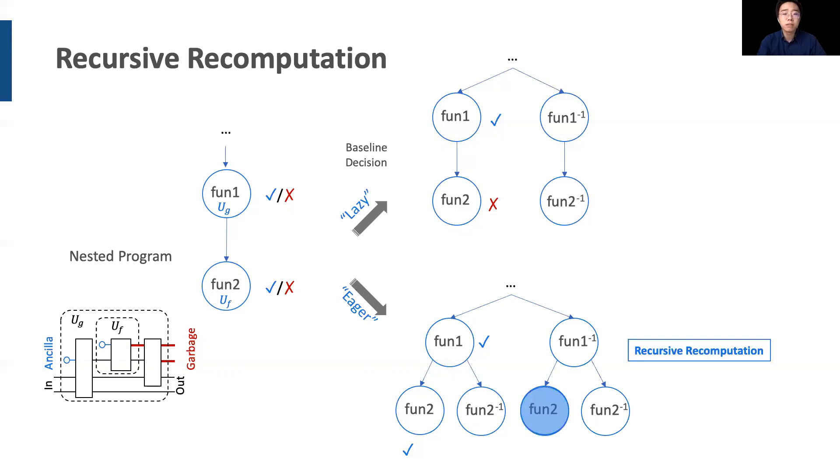In our experiments, we call the top strategy the lazy baseline, where qubit reclamation is done only at the top level of a multi-level nested program. We call the bottom strategy the eager baseline, where all functions are uncomputed. Square finds a middle ground with a balanced cost.